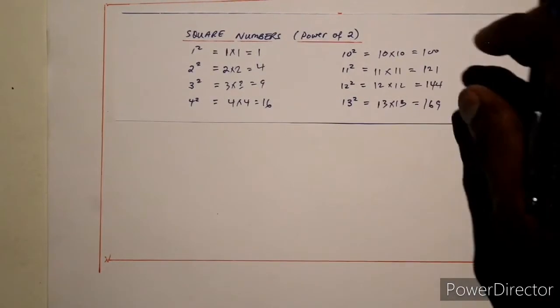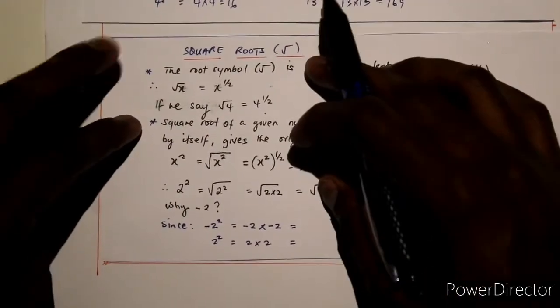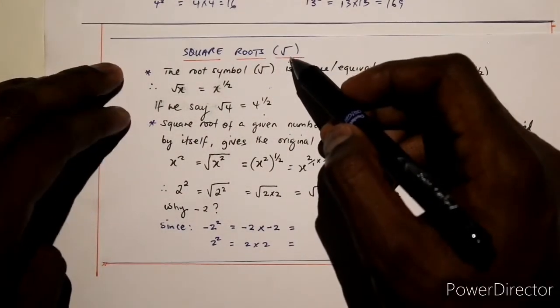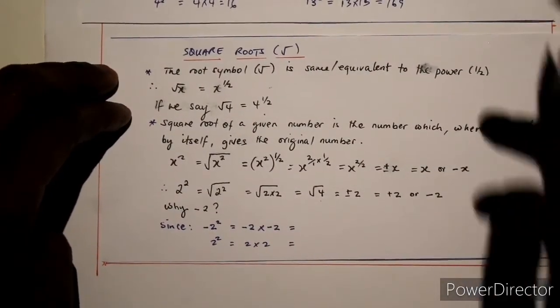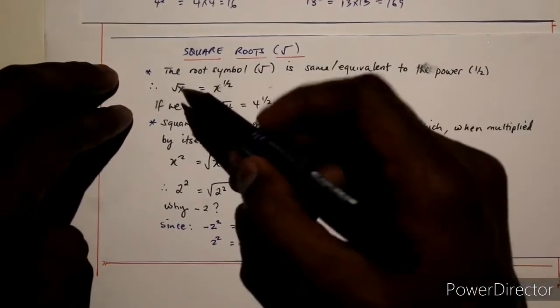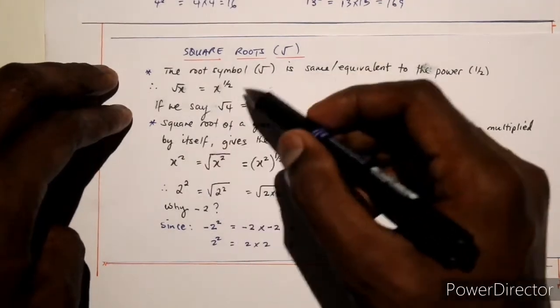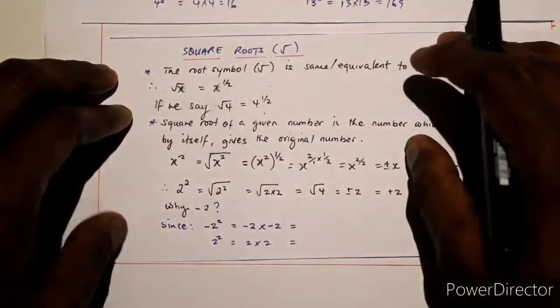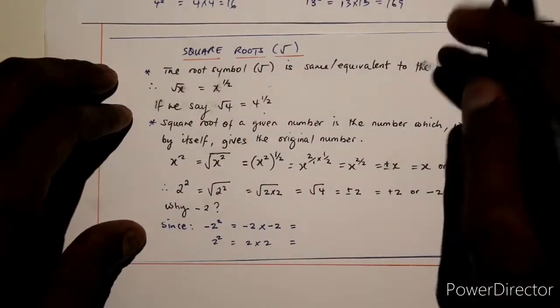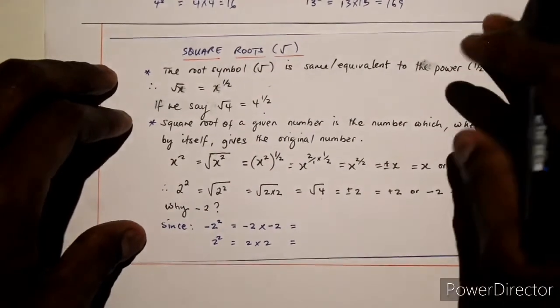So when you know your square numbers, it's now easier to understand square roots. When dealing with square root, you have this symbol here. The root symbol is equivalent to the power of one half. So if we say square root of x, it's simply the same as x to the power of one half. For example, square root of 4 is the same as 4 raised to the power of 1 over 2.